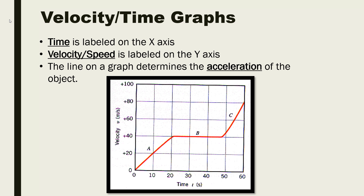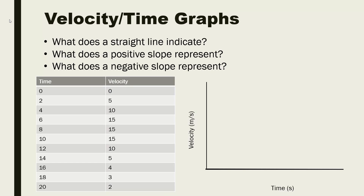For simplicity, I want to go ahead and introduce acceleration. Acceleration is just a change in velocity's rate, and on a velocity-time graph we can see how an object might change its rate. You need to be able to describe what it means if you see a straight line versus a positive slope or a negative slope.